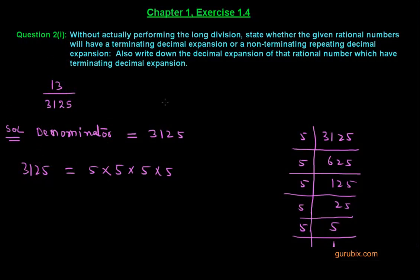Here is the question, second of exercise 1.4 of chapter 1. It says, without actually performing long division, state whether the given rational number will have a terminating decimal expansion or a non-terminating repeating decimal expansion. Also write down the decimal expansion of that rational number which have terminating decimal expansion. In the first part of the question, we are given a rational number which is 13 over 3125.